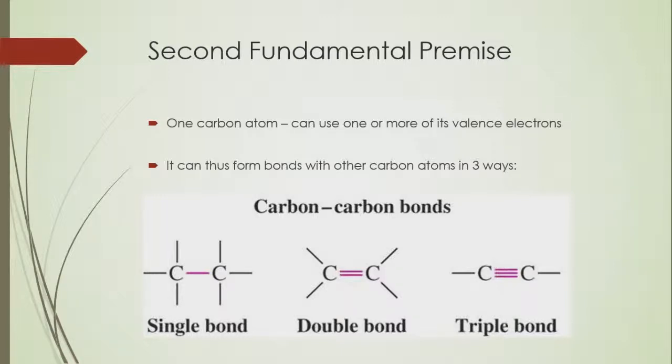one or more of its valence electrons to form different types of bonds. So over here you can see that there are three types of bonds that can occur between two carbon atoms: a single bond, a double bond, and a triple bond. This is the second fundamental premise. So that's it for this video.